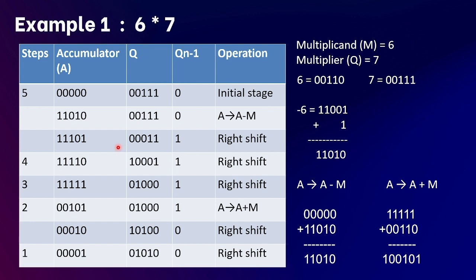Starting the fourth step, we check Q's least significant bit which is 1, and Q minus one is 1. For the 1,1 case we only perform an arithmetic right shift, giving accumulator 11110, Q 10001, and Q minus one 1. The fourth step is complete and count is decremented from 4 to 3.